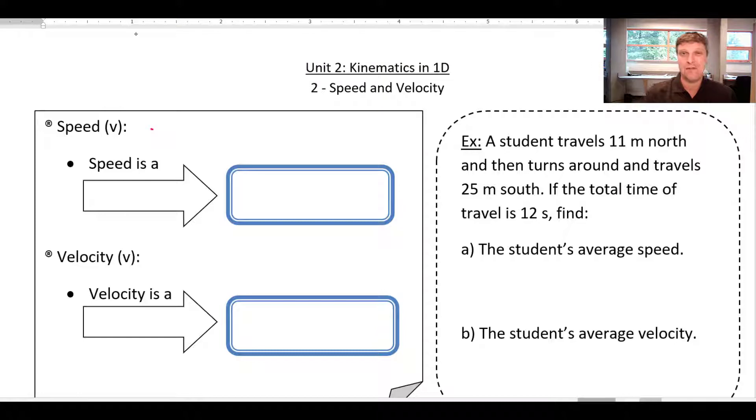Speed is just simply defined as the rate of change of distance, so how far you travel in a certain amount of time. The symbol for speed is v, lowercase v. Speed is definitely a scalar.